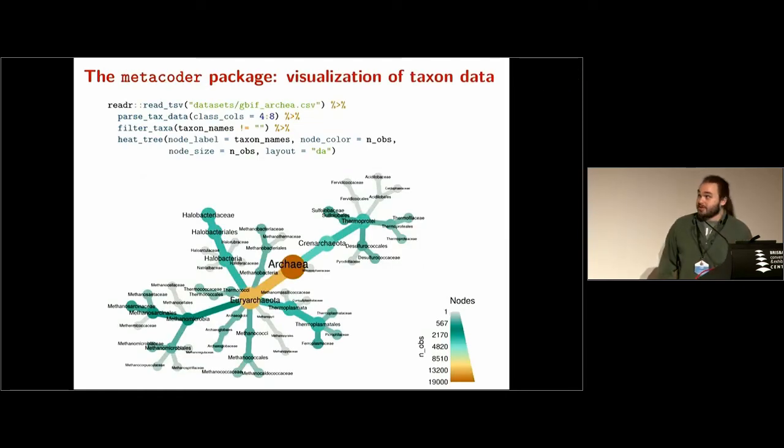Metacoder is the other package. It's used for a couple things. The relevant thing here is visualizing taxonomic data. This is a taxonomic tree with color and size encoding some statistic of interest - this could be any statistic you want. This is a pretty simple graph relative to what it can do. But in this case, we're looking at the number of observations associated with each taxon in the GBIF Archaea CSV file that I showed you previously.